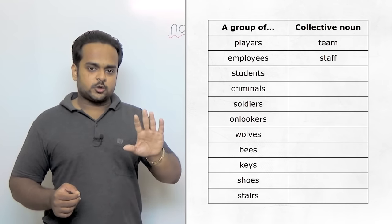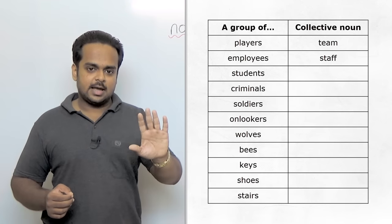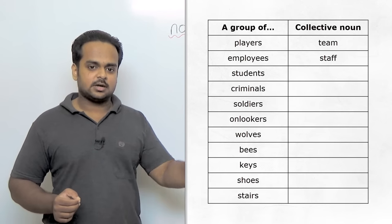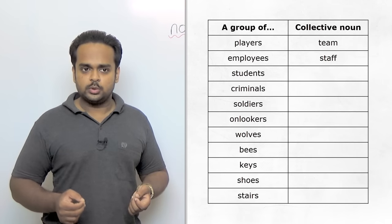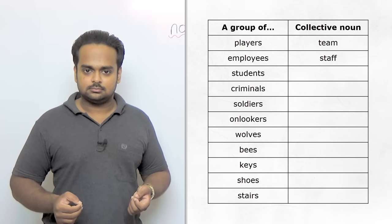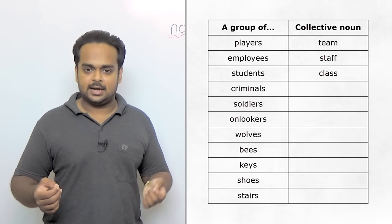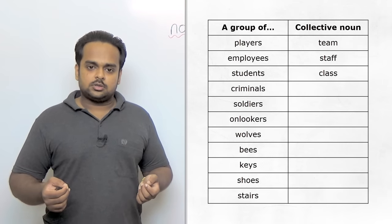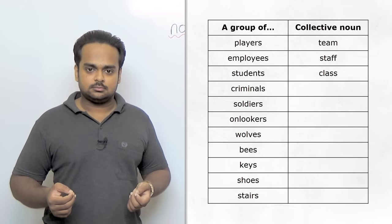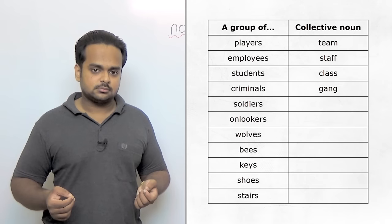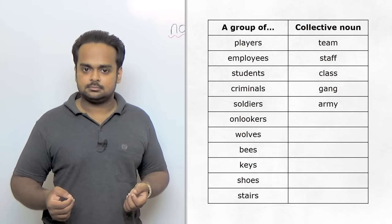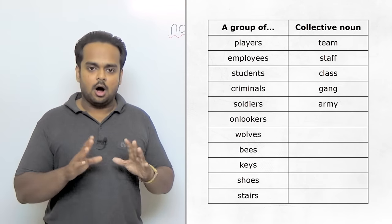In the same way, on the screen I have some more examples, but I want you to guess the collective nouns before I show them to you. What do we call a group of students? A group of students is a class. What about a group of criminals? A gang. A group of soldiers is an army.